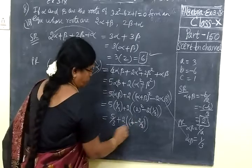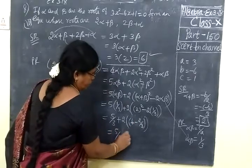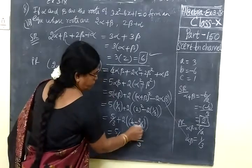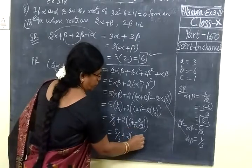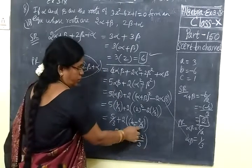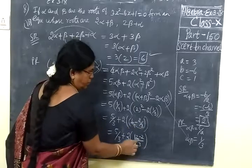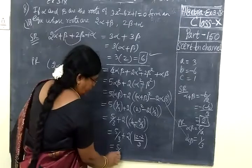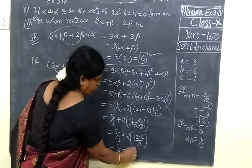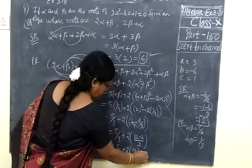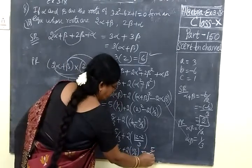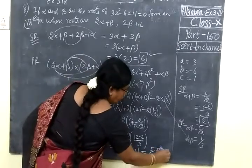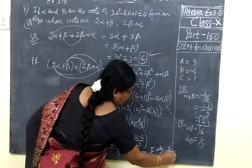4 minus 2 by 3. Equal to 5 by 3 plus 2 bracket. LCM 3, cross multiply. 4 into 3, 12 minus 2. First you are cross multiplying, 4 into 3, LCM is 3, then 12 minus 2, 10 by 3. Equal to 5 by 3 plus 2 bracket, 10 by 3. This is equal to 5 by 3 plus 20 by 3, equal to 25 by 3.